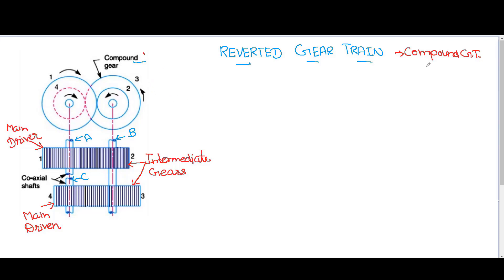Now how can we say that this particular gear train is a type of compound gear train? Let us look at shaft B. On this shaft B, there are two gears mounted — gear number two and gear number three. Any gear train is said to be a compound gear train when on one of the shaft axes there is more than one gear mounted. As we can see on shaft B, there are two gears mounted, hence we can surely say that this is a type of compound gear train.